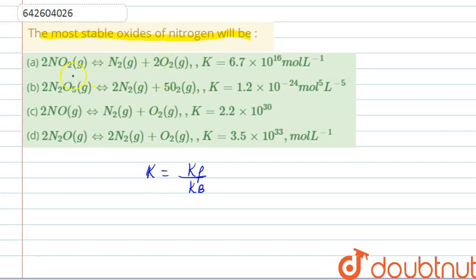Now we know that for stability of oxides, higher will be the backward portion. So equilibrium constant for backward reaction should be greater than that of forward reaction. Kb should be greater than Kf.